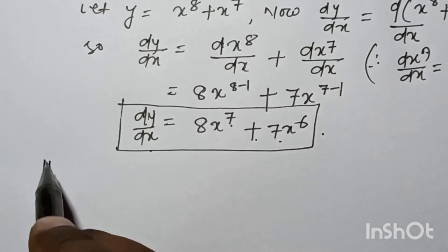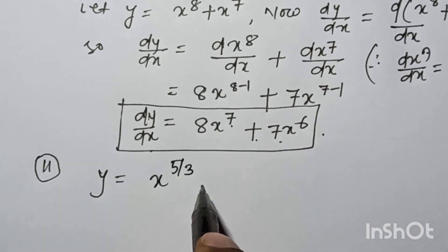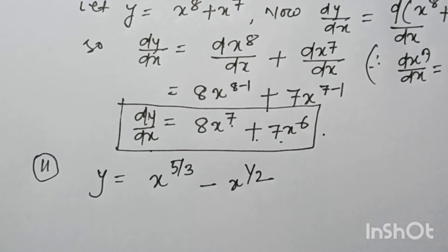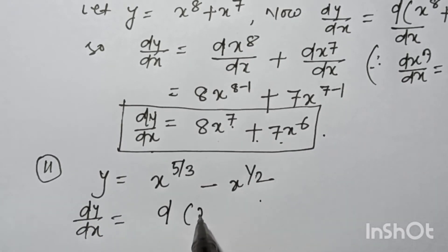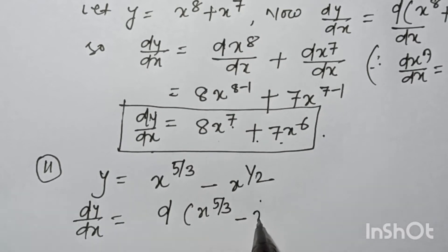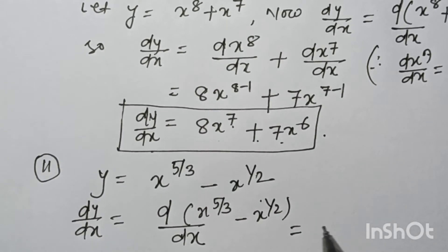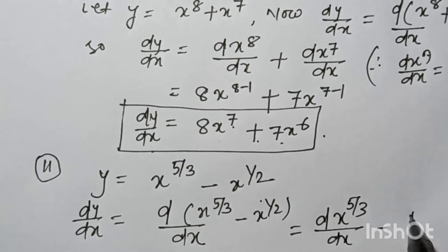Now question number 2: y is equal to x^(5/3) minus x^(1/2). We can write dy/dx as d(x^(5/3))/dx minus d(x^(1/2))/dx.